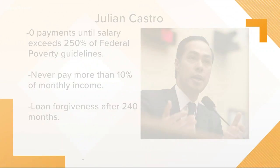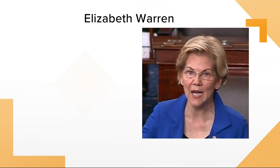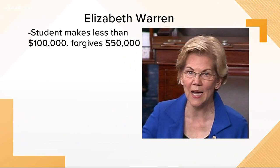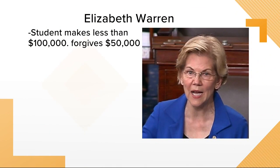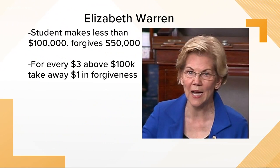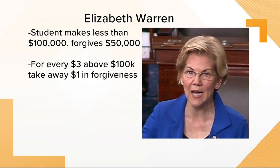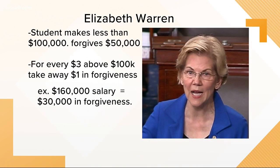Senator Elizabeth Warren has her own plan, and it's more like a math problem. It forgives $50,000 of debt immediately for students making less than $100,000 after college. But for every $3 you make above $100,000, it takes away $1 of forgiveness. For example, if you made $160,000, it would only forgive $30,000.